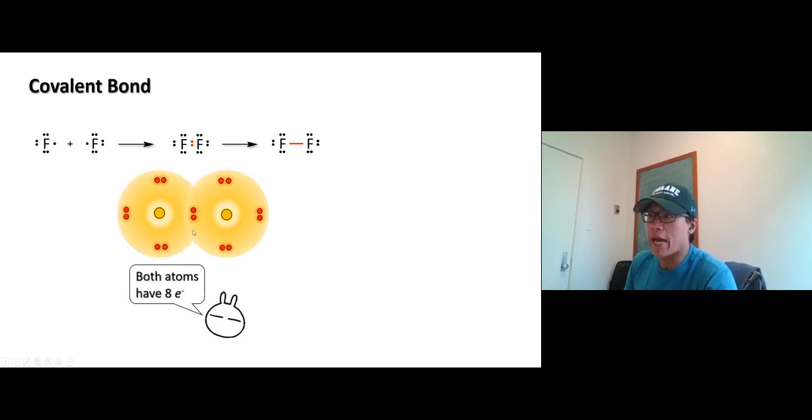Now some of you may ask, okay in ionic bond one of them is cation positive charge, the other one is an ion the negative charge, so they attract they can stay together.